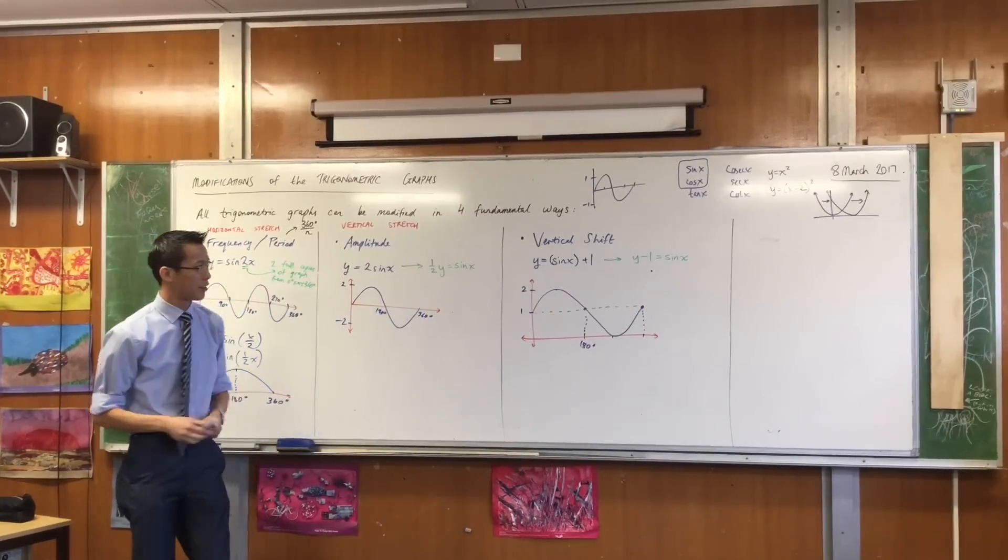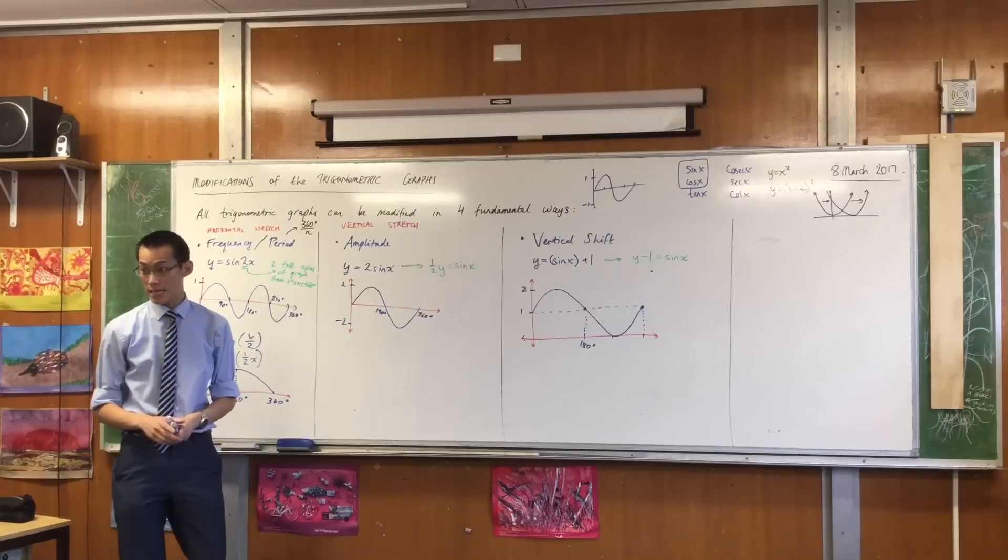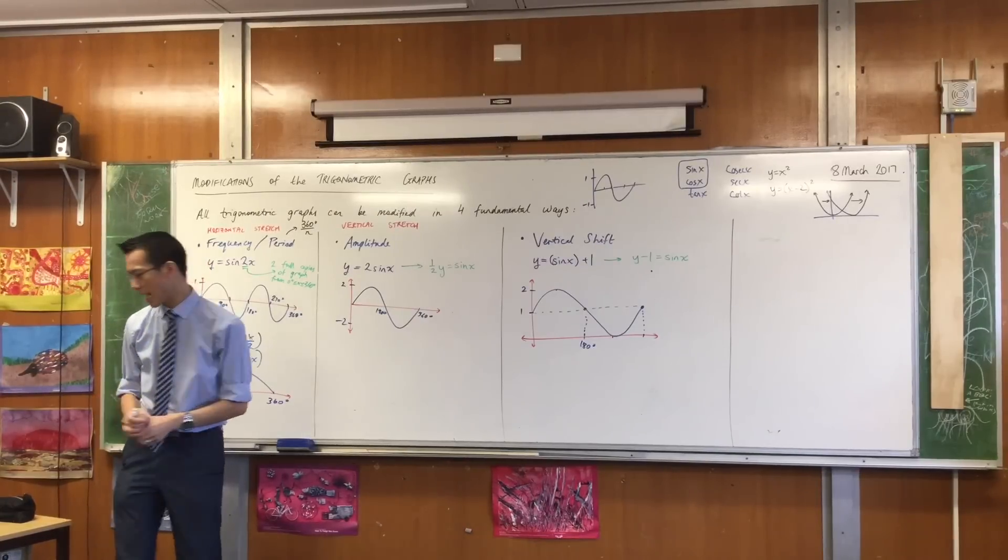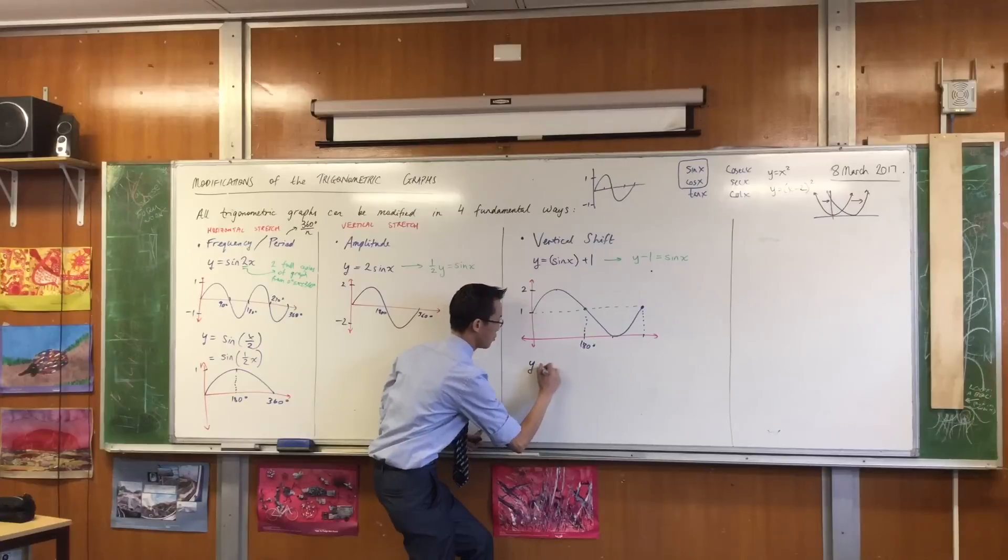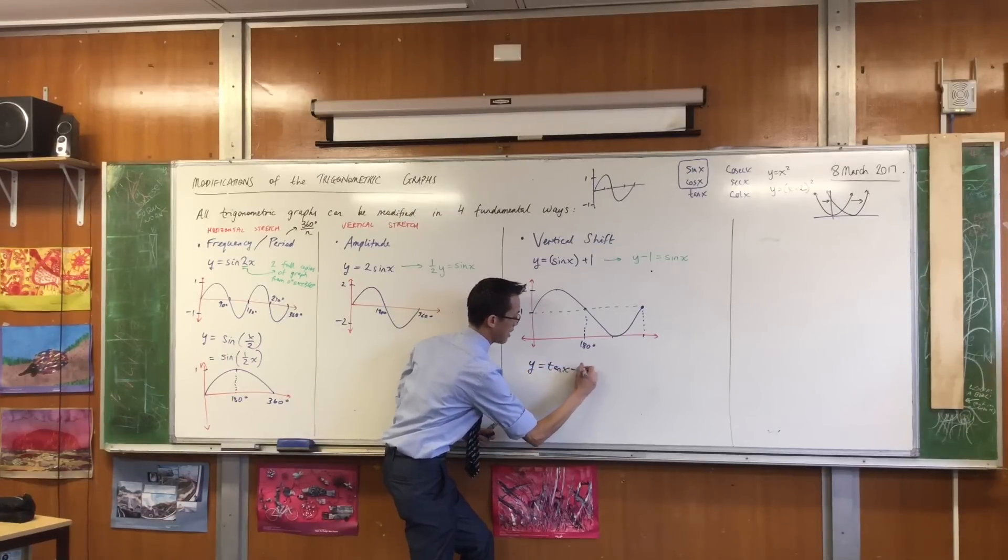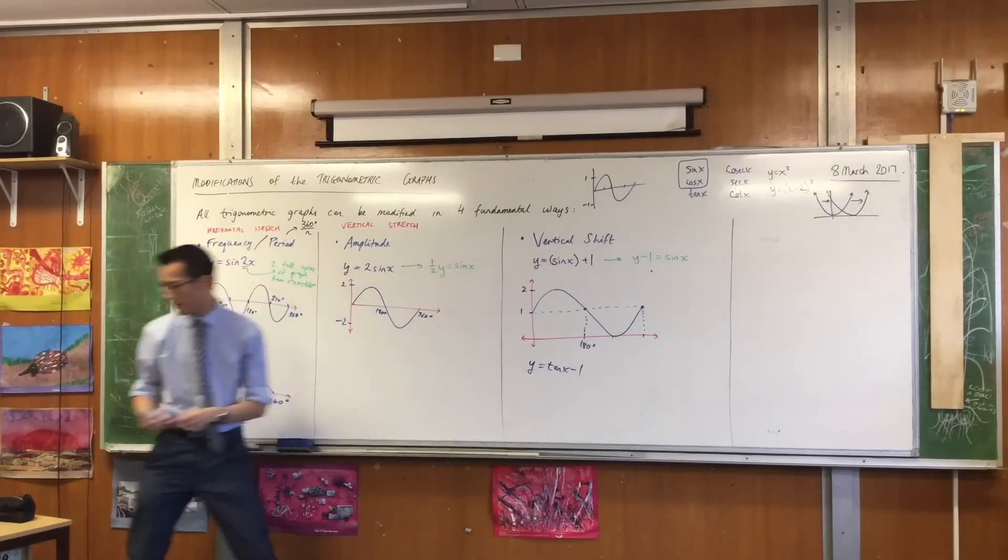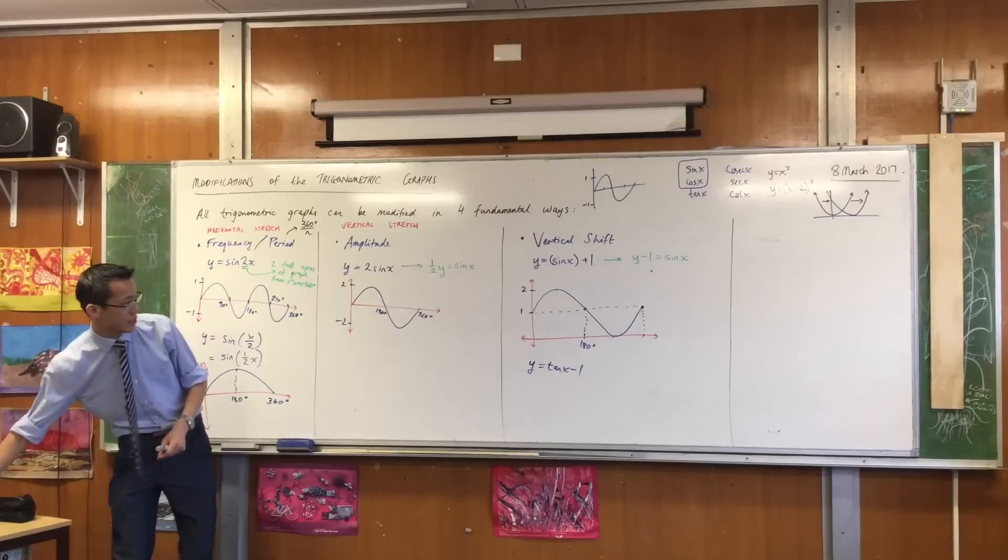Okay. Now while we're on vertical shift, sine x and cos x are pretty easy to move around. I want to do tan just quickly before we move around, because it's a bit harder. If I said to you, y equals, let's do tan x minus 1. Can we do that? We'll do it from 0 to 360 again.